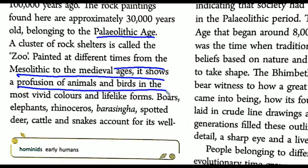The paintings show a profusion of animals and birds in the most vivid color and lifelike forms — boars, elephants, rhinoceros, barasingha or spotted deer, cattle, and snakes. The term 'spotted' means you have to spot them, as they are somewhat hidden behind the colors of red and white. We see paintings in red, white, and yellow.